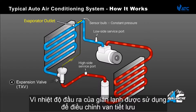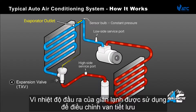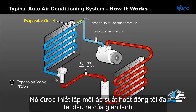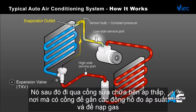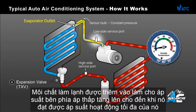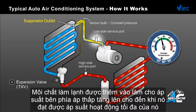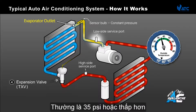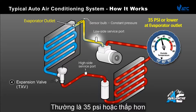Because the evaporator's outlet temperature is used to regulate the TXV valve, it sets a maximum operating pressure at the evaporator outlet. It then flows through the low side service port, where in many cases it is being measured by a low side gauge only to charge the system. As refrigerant is added, the pressure on the low side rises until it reaches its maximum operating pressure, which is typically 35 psi or lower.